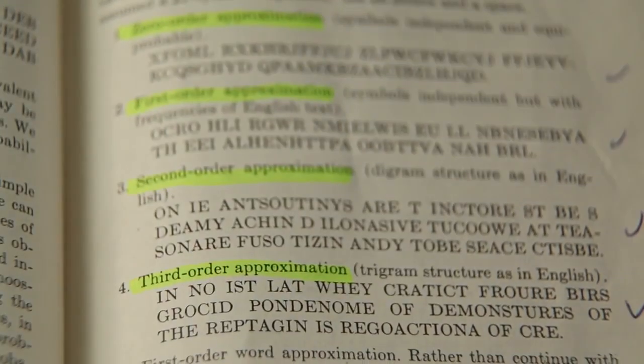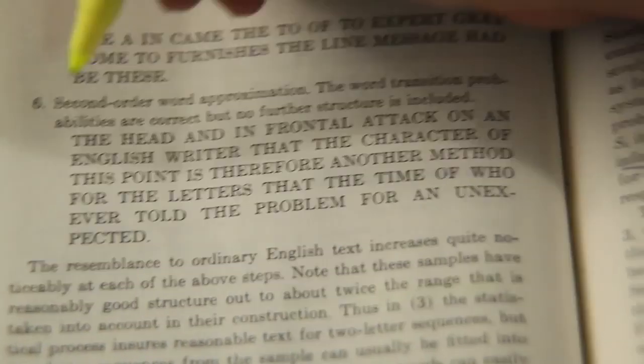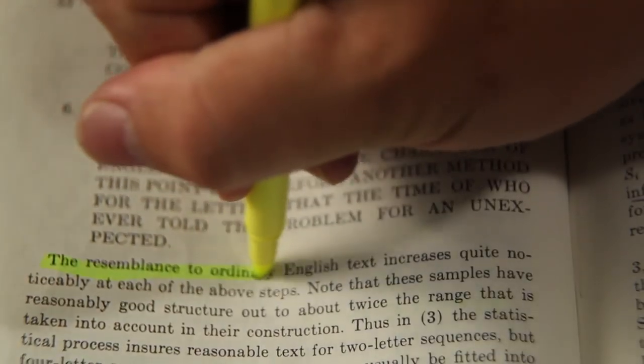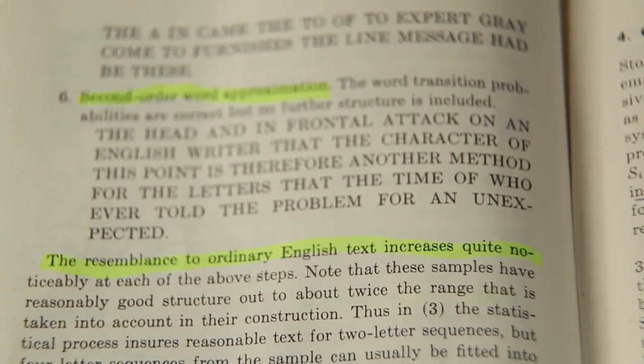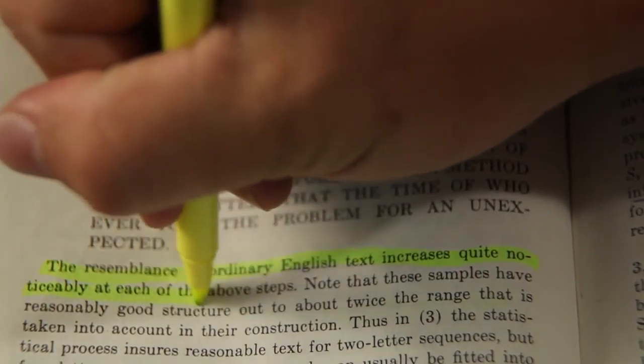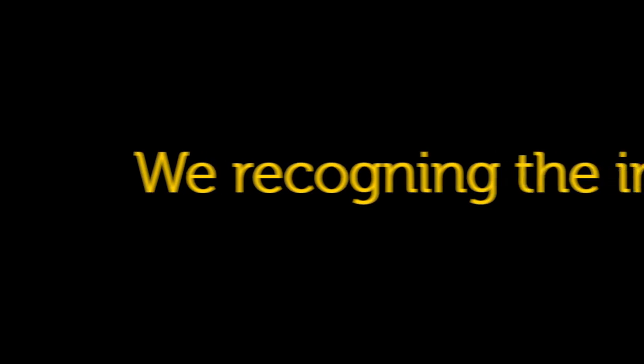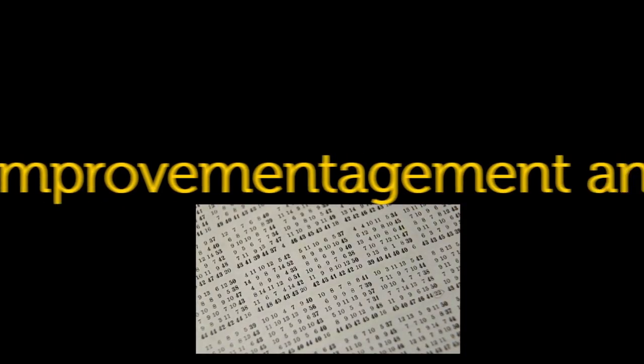He then tries the same thing using words instead of letters. He writes, 'the resemblance to ordinary English text increases quite noticeably at each depth.' Indeed, these machines were producing meaningless text, though they contained approximately the same statistical structure as actual English.